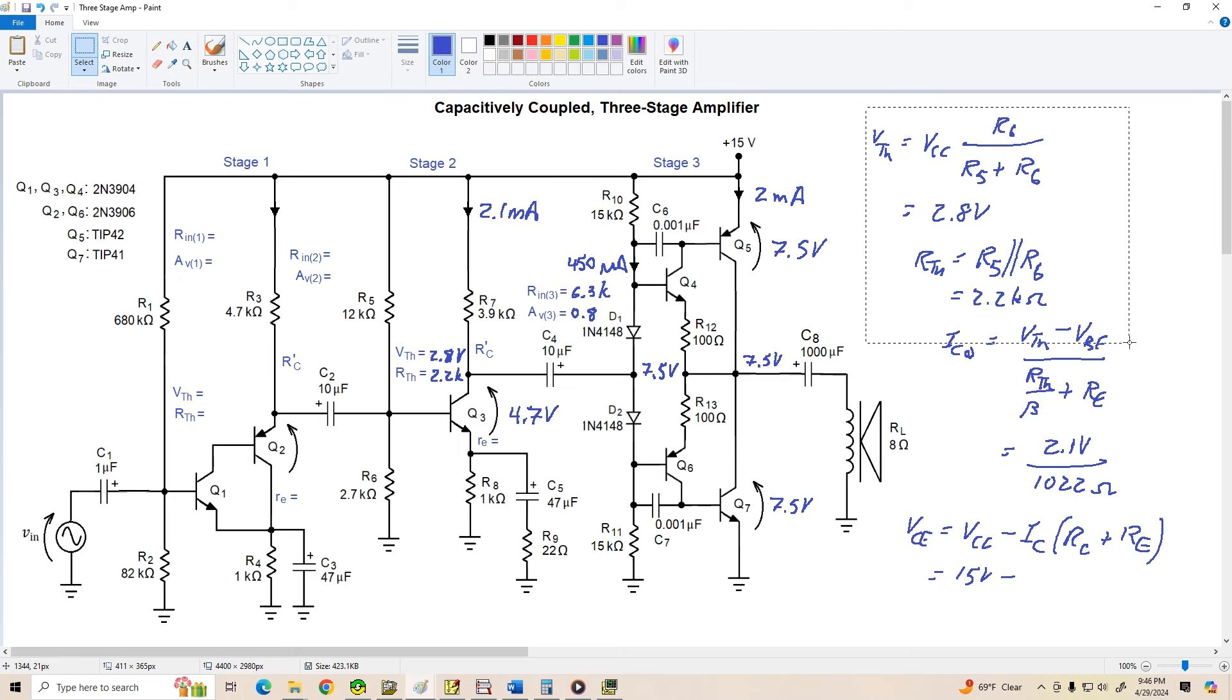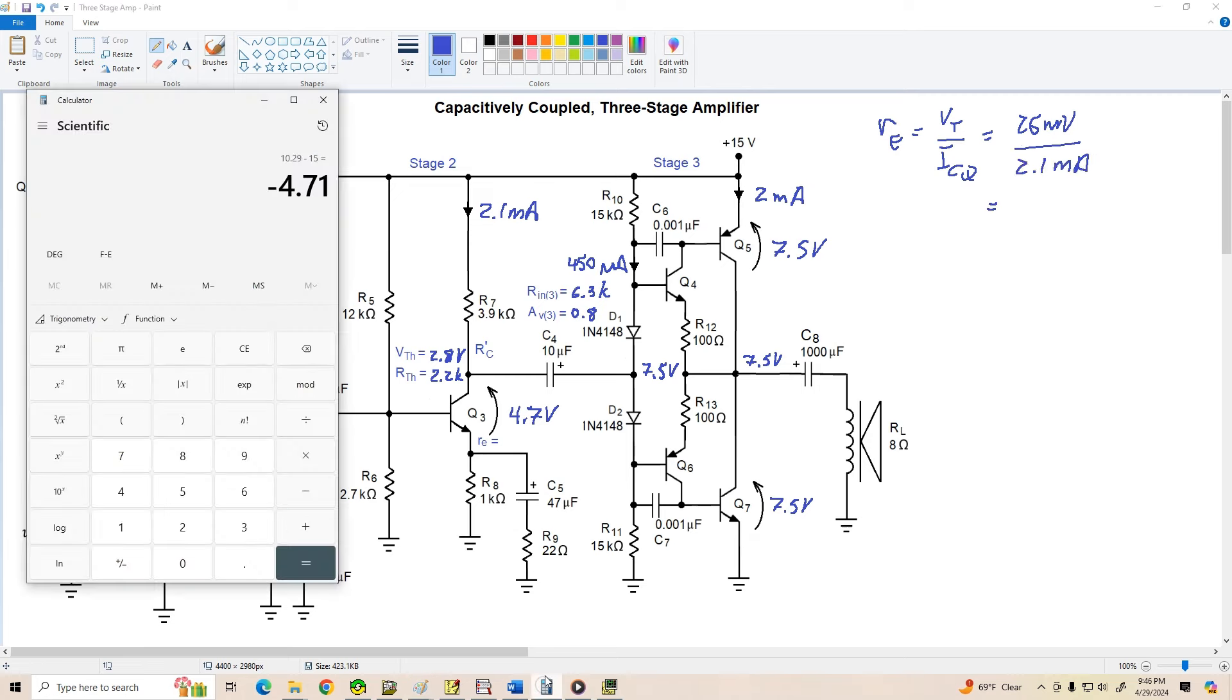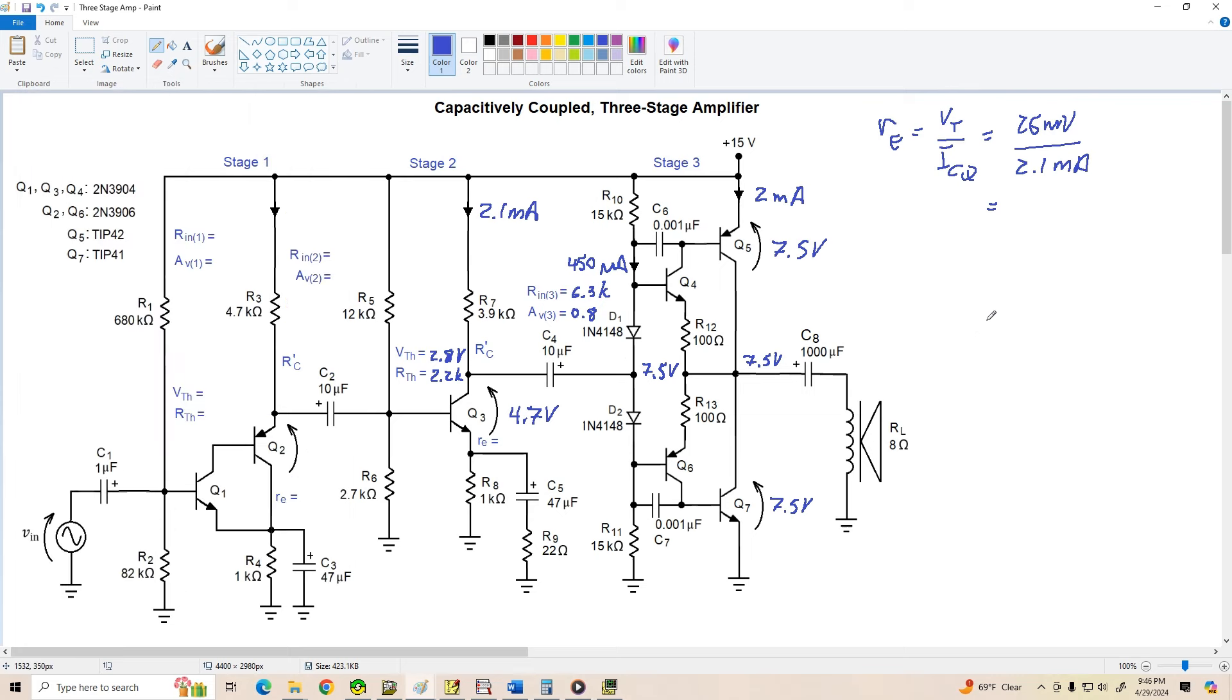Now, let's clear the workspace off and let's find our little RE for Q3. Remember, little RE is equal to VT over ICQ. So that's 26 millivolts divided by ICQ is 2.1 milliamps. 26 divided by 2.1 is about 12.4 ohms.